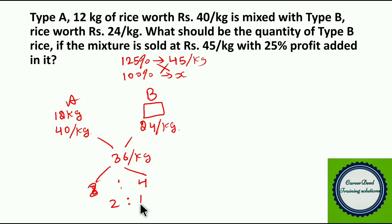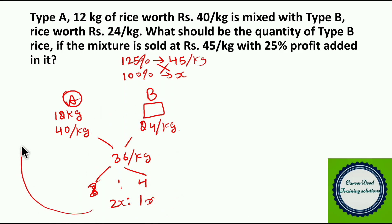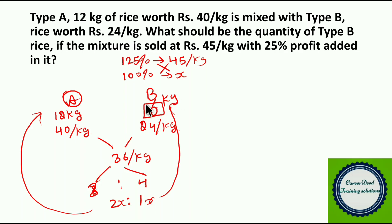The ratio of type A to type B is 2:1. Since type A is 12 kg (2 parts), type B (1 part) is 6 kg. So the answer is 6 kg of type B rice.